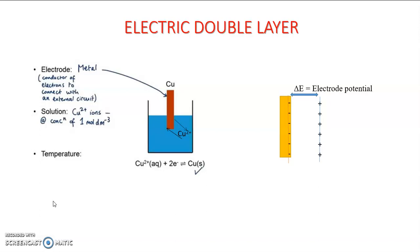When we dip a metal into its solution, the metal ions from the electrode go into the solution in the oxidation process, leaving electrons on the metal electrode surface. As the metal ions go into solution, there is accumulation of positive charges in the electrolyte part.